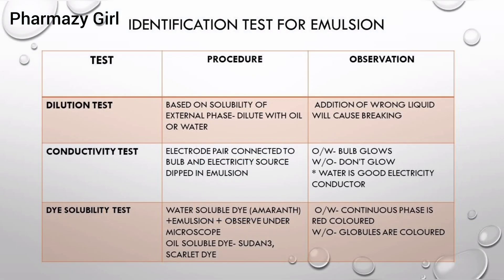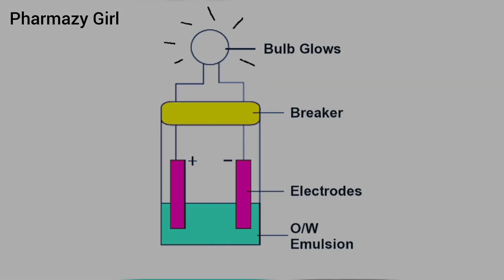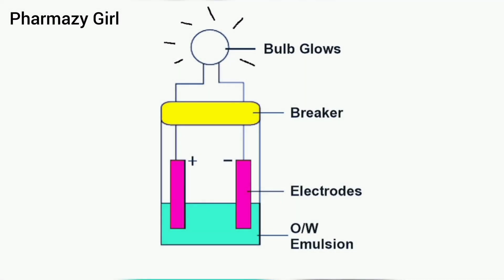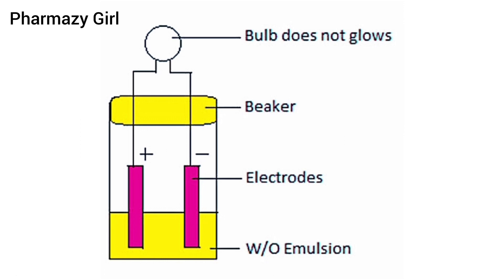The second identification test for emulsion is the conductivity test. It is based on the fact that water is a good conductor of electricity. In this test, electrodes are placed in the test emulsion and electricity is supplied. The bulb will glow due to the conductivity of water, which means the test emulsion is oil in water emulsion. But if the bulb doesn't glow, it means the test emulsion is water in oil emulsion, because oil does not conduct electricity.